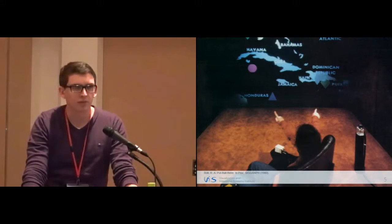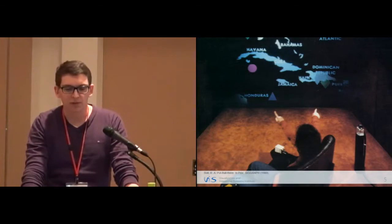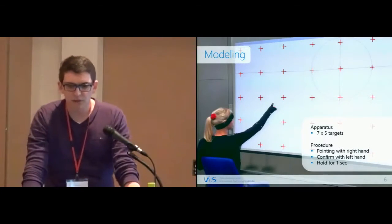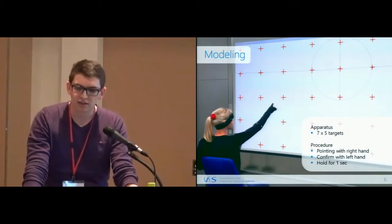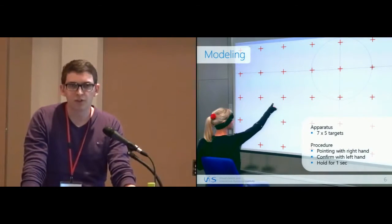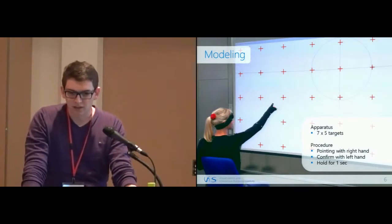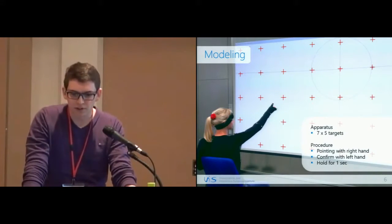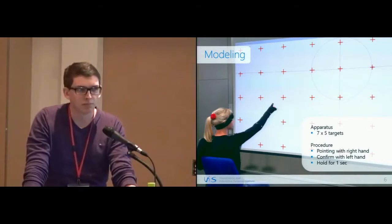So how do we enable computers to determine which object you're pointing at? We think the computer needs an underlying understanding of human pointing behavior. Therefore, we think the computer needs a model, and we built this model.